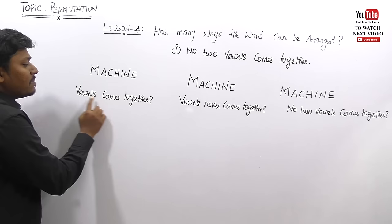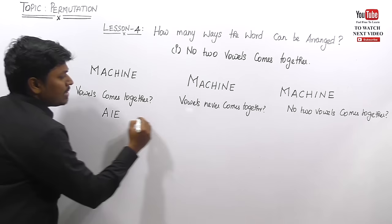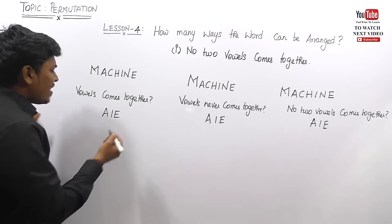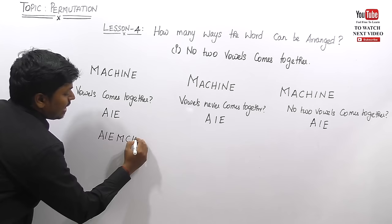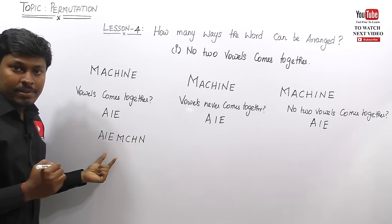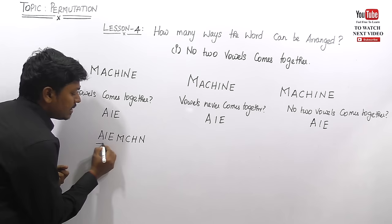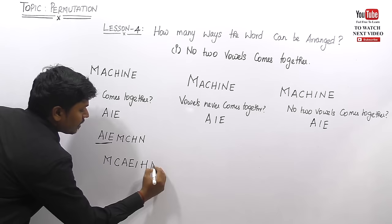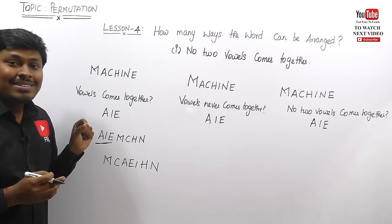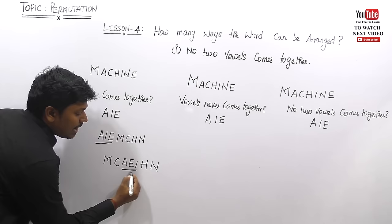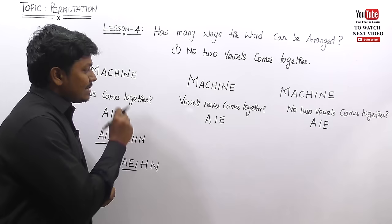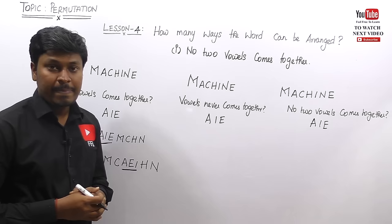Let me use the word 'MISSION' to illustrate. The vowels are A, I, E. For 'vowels come together,' all three vowels must appear together. So I can write a word like A-I-E-M-C-H-N where the vowels are grouped. Similarly, M-C-A-E-I-H-N is also valid because all three vowels A, I, E are together. This is the concept from Lesson 2 — vowels come together.